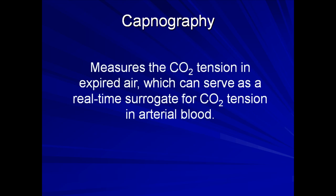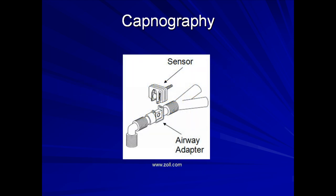Now let's move on to capnography. Capnography provides a continuous measurement of carbon dioxide tension in expired air, which can serve as a real-time surrogate for carbon dioxide tension in arterial blood. Most capnography utilizes infrared spectrography: an emitter and photo detector are placed along the ventilator tubing. The emitter produces light in the infrared spectrum, and certain wavelengths are selectively absorbed by carbon dioxide — the less light detected at those wavelengths, the greater the concentration of interposed carbon dioxide. This is a similar principle to that used in pulse oximetry.